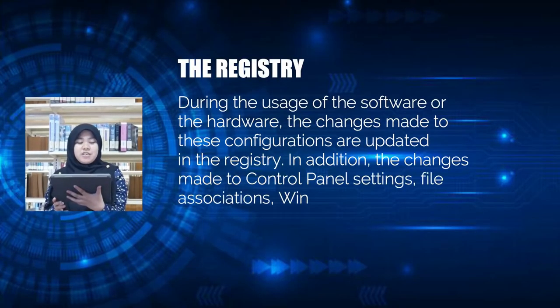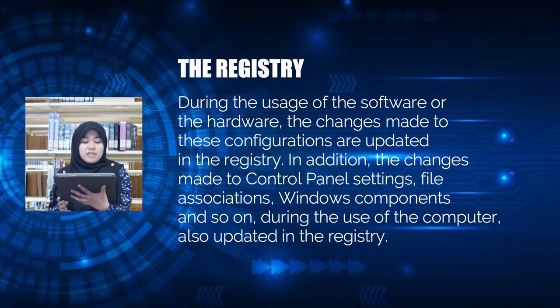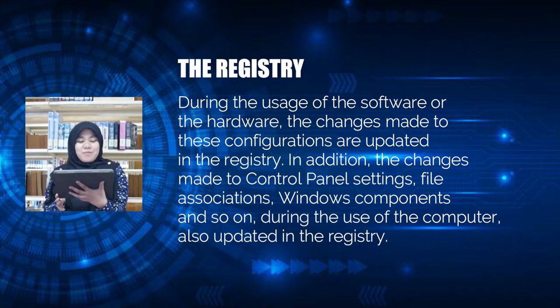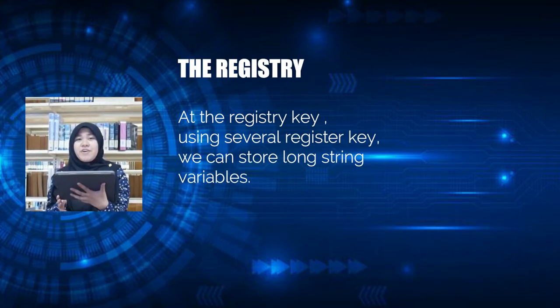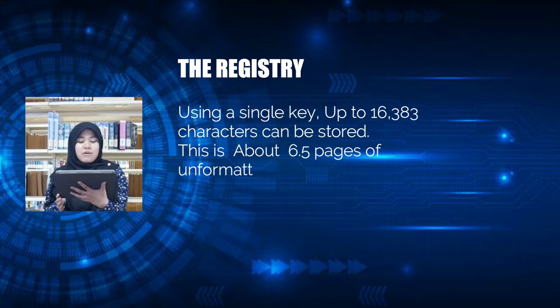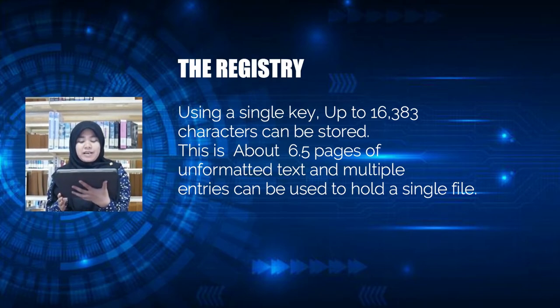The first way to find hidden data is in the registry. During the usage of software or hardware, changes made to the configuration are updated in the registry. Changes made to control panels, file associations, window components, and so on during computer use are also updated in the registry. Using several registry keys, we can store long string variables — a key can store up to 60,383 characters, which is about six pages of unformatted text — and multiple entries can be used to hold a single file.